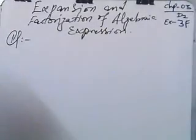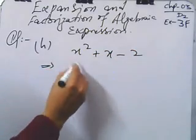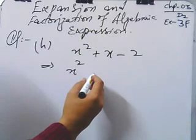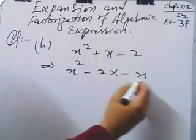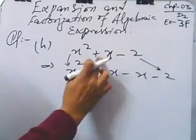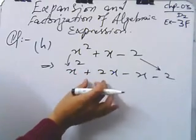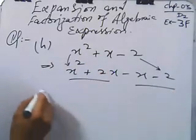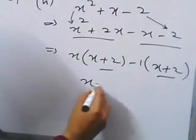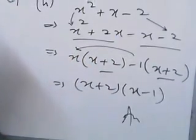Similarly, part e: x² + x − 2. Make the factors — by multiplication, two ones are two. After subtraction we get plus one. The sign of the larger term should be used, so it becomes plus two minus one, giving plus one. Make the pairs, take x common and minus one, then x + 2 can be taken common, giving the result (x + 2)(x − 1).